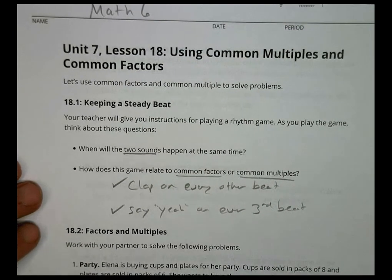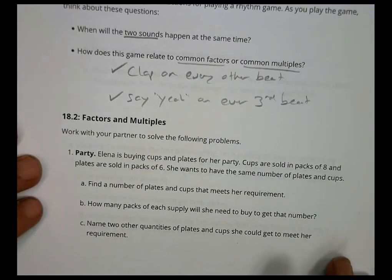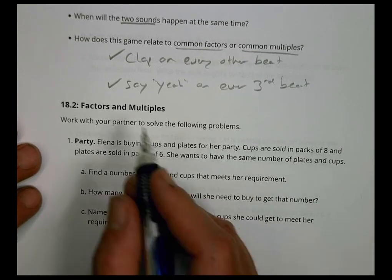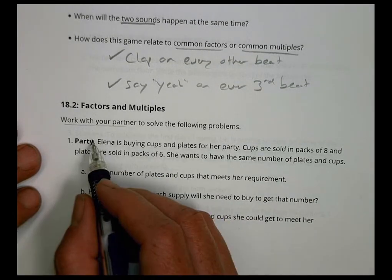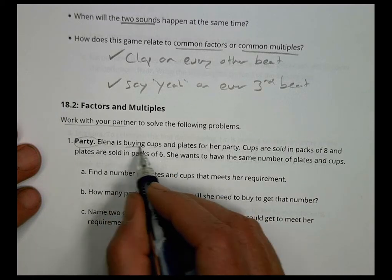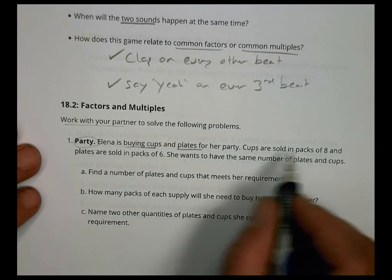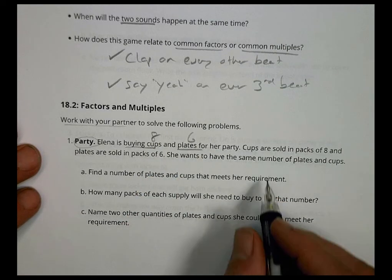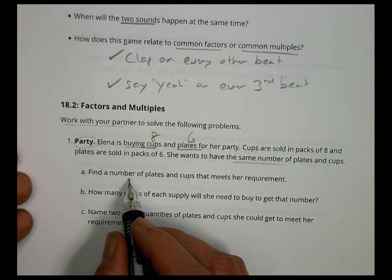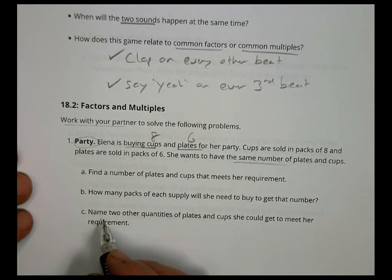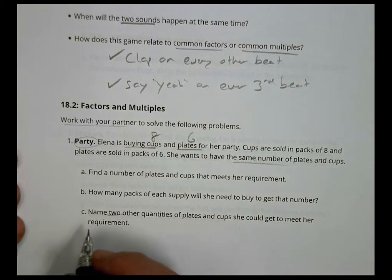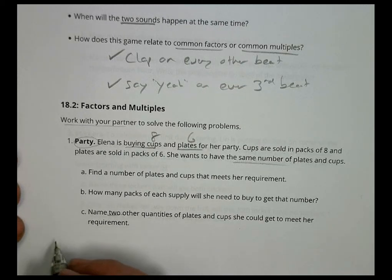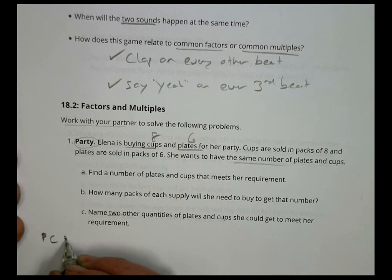That's the idea — it gets hard to have a good rhythm and talk at the same time. Now let's move on to playing with factors and multiples. Work with a partner: at a party, Elena is buying cups and plates. Cups are sold in packs of eight, plates in packs of six. She wants the same number of plates and cups.